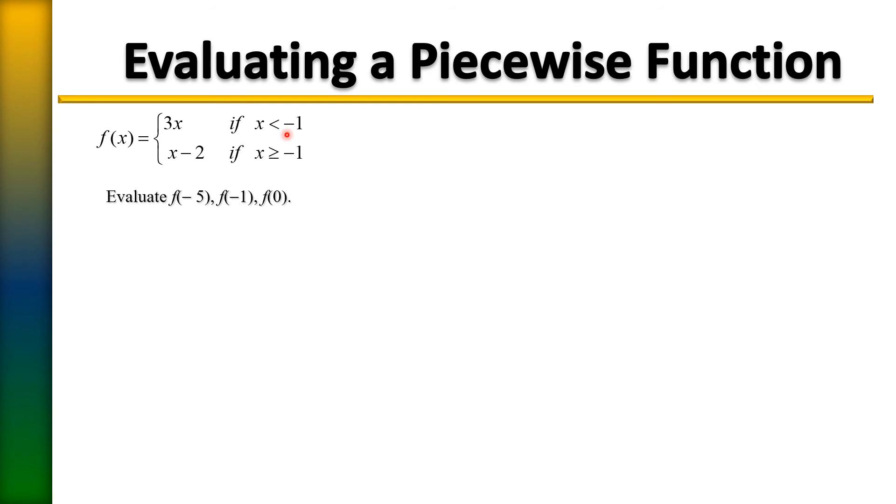So that means I'm going to have to plug negative five into the function f of x equals 3x. I'm going to remove the x and replace it with negative five and do the math.